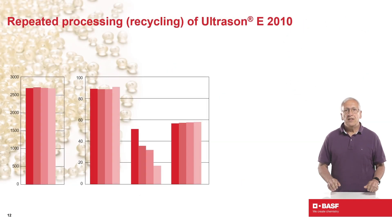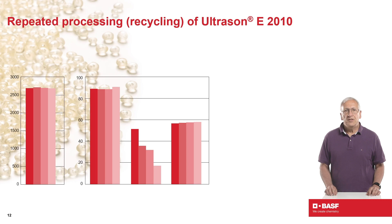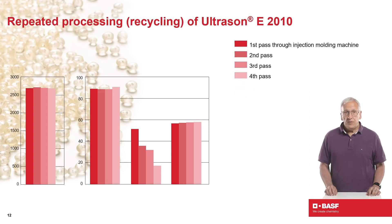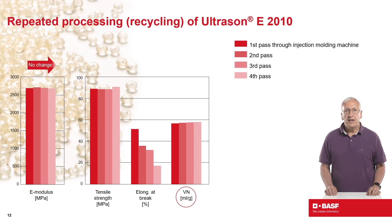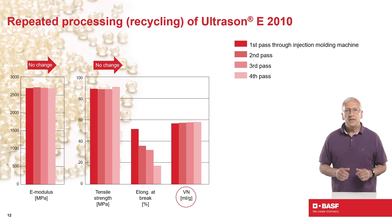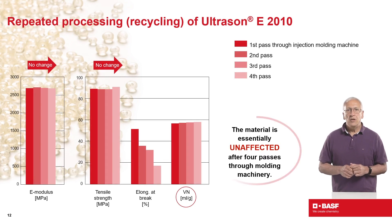Another important attribute of Ultrason is that it is essentially unaffected by repeated processing. Here are some data demonstrating multi-pass molding effects on viscosity and on physical properties. Four passes through a molding machine are shown from left to right for selected properties. In this case, for Ultrason E2010, modulus and tensile properties at yield are reported as per standard convention for high-modulus thermoplastics. You will note that all properties remain essentially unchanged.